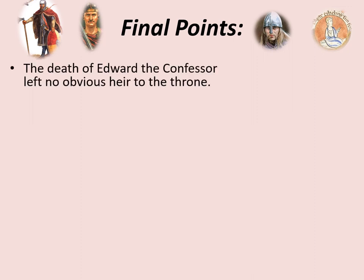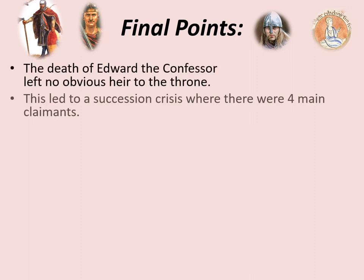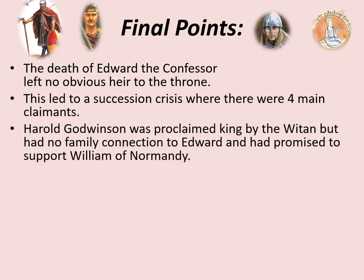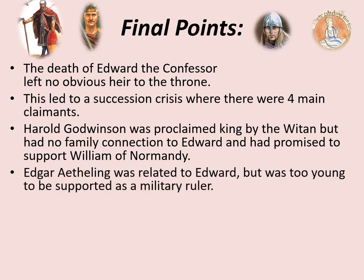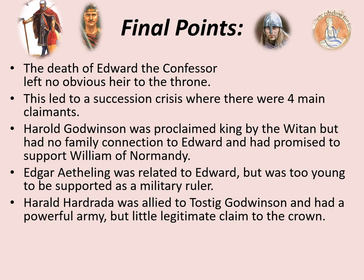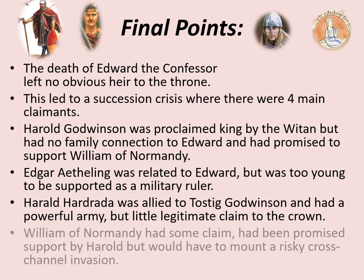Some final points: the death of Edward the Confessor left no obvious heir to the throne, leading to a succession crisis with four main claimants. Harold Godwinson was proclaimed king by the Witan but had no family connection to Edward and had promised to support William, probably under duress. Edgar Aetheling was related to Edward but too young to be a military ruler. Harold Hardrada was allied with Tostig and had a powerful army but little legitimate claim. William of Normandy had some claim and Harold's promised support, but would have to mount a risky cross-channel invasion. Who do you think is most likely? You probably know who wins, but that doesn't necessarily mean they had the strongest claim.